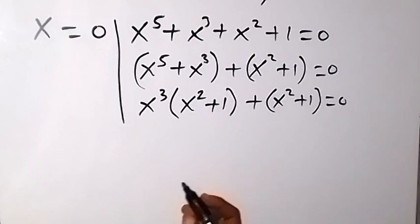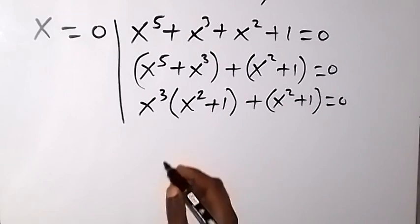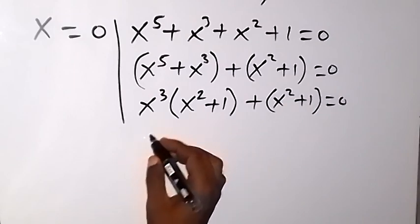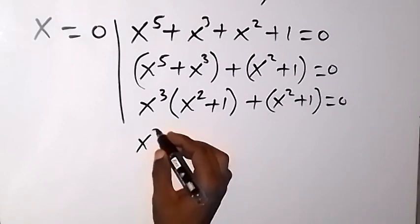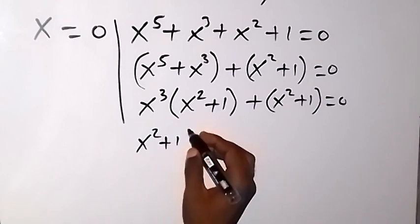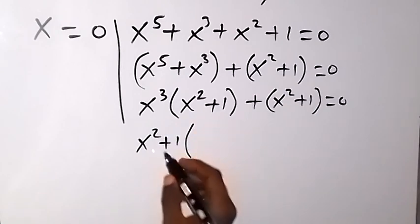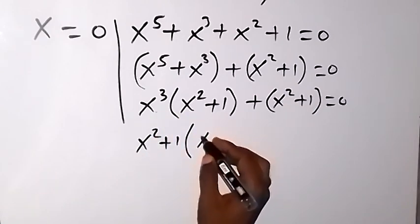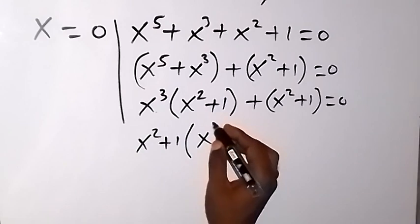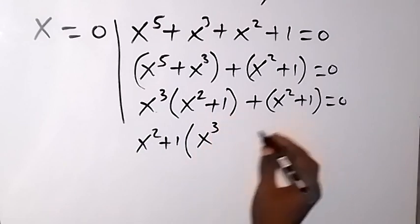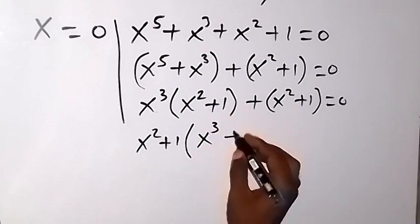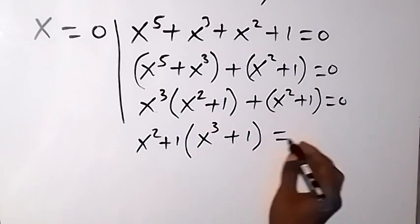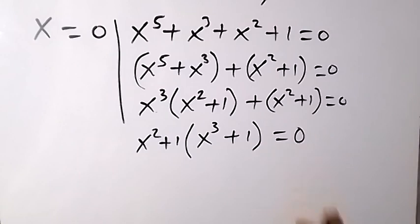This gives us x cubed times (x squared plus 1), plus (x squared plus 1), which equals 0. Since x squared plus 1 is common, we factor it out: (x squared plus 1) times (x cubed plus 1) equals 0.